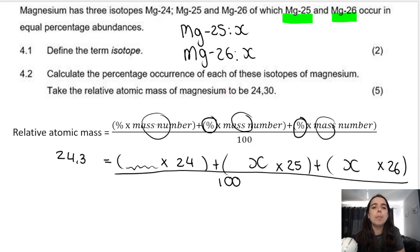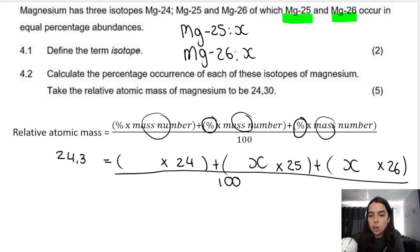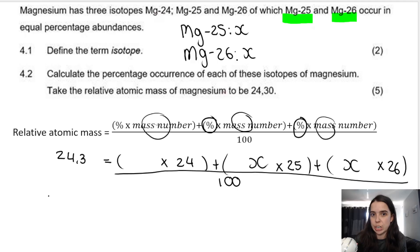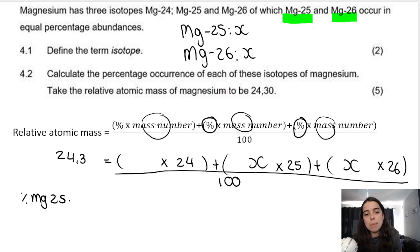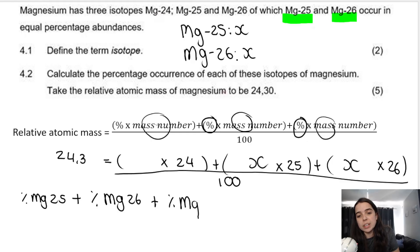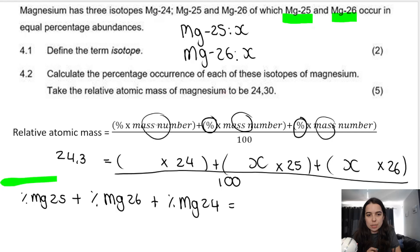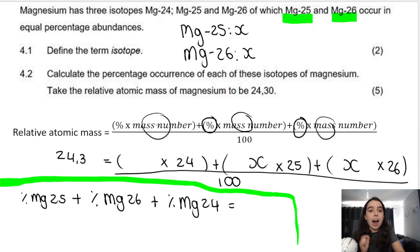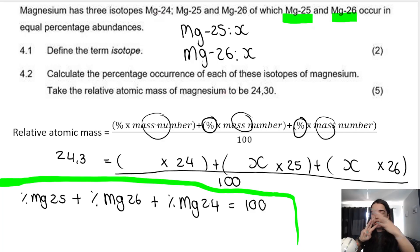Now I need to figure out the percentage abundance for Mg24. Here's how: as rough work on the side of your page, the percentage of Mg25 plus the percentage of Mg26 plus the percentage of Mg24 — if you add all three percentage abundances together, it must give you 100%.